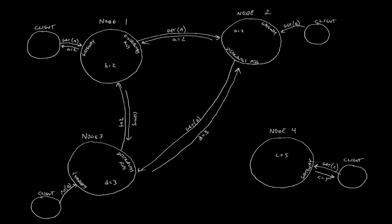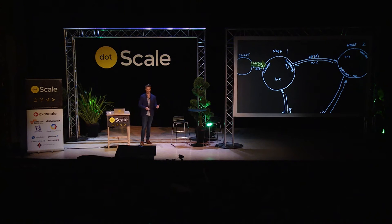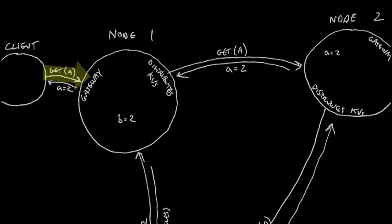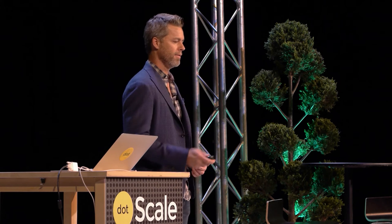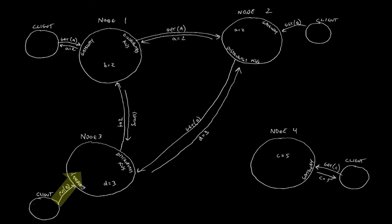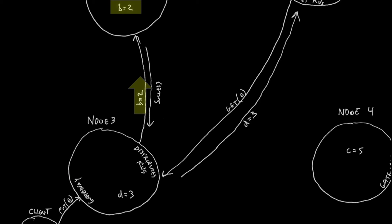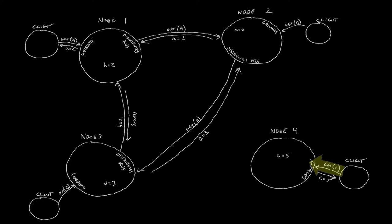Here's a diagram of a cluster with four nodes, each with a locally attached client. In one example, the client connected to node 1 fetches the value for key A — it goes to the gateway, which sends the request to node 2 where key A is located, and returns the value. In another example, a client on node 3 puts a value for key B, which is on node 1 — the distributed KV client sends it to node 1 and returns success. And in a simple local case, a client on node 4 accessing key C finds it local to node 4, so it's returned trivially.